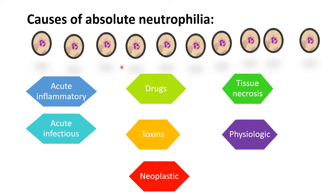Conditions causing absolute neutrophilia include acute inflammatory conditions like vasculitis and collagen vascular diseases, infectious causes such as bacterial, viral, fungal, and parasitic infections, drugs and toxins, metabolic causes like ketoacidosis, and tissue necrosis including burns, trauma, myocardial infarction, and hemolysis.